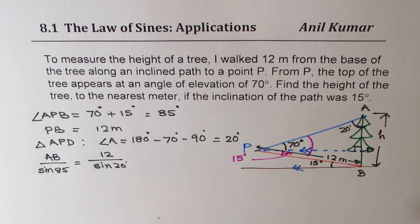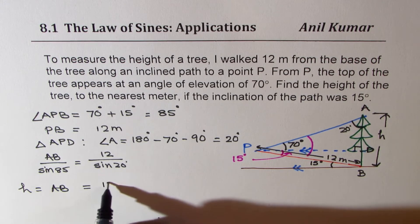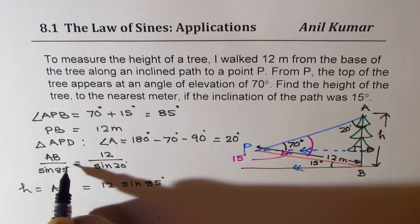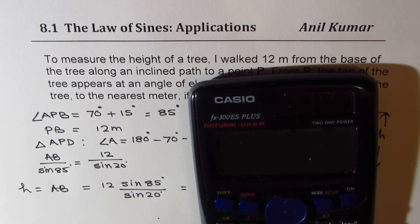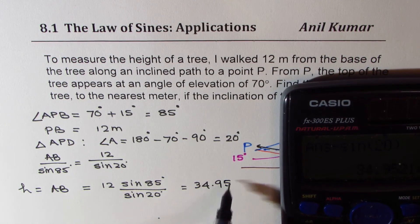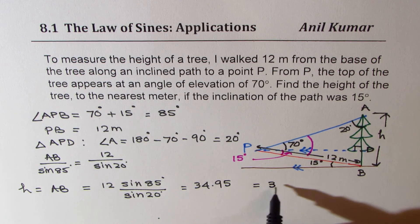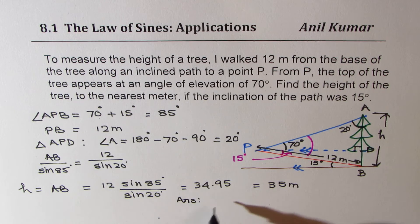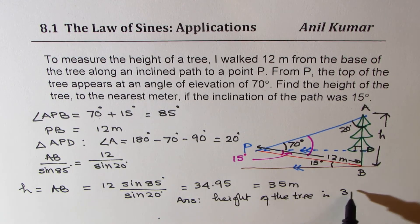From here cross multiply to find AB which is also the height. AB is the height for the tree. Is 12 times sine of 85 degrees divided by sine of 20 degrees. Let's calculate. So we have 12 times sine of 85 degrees, and we are going to divide this by sine of 20 degrees. So we get 34.95. Let me round it to whole numbers since all the numbers are in whole numbers. So we get 35 meters. So our answer is height of the tree is 35 meters.